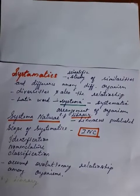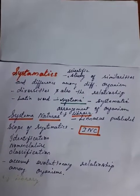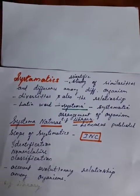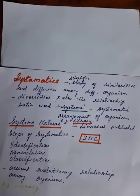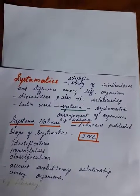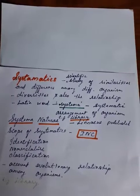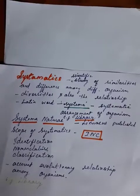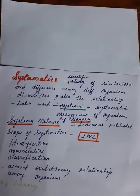The scope of systematics can be remembered easily: I — identification, N — nomenclature, C — classification. Systematics accounts for evolutionary relationships among organisms. So far I have covered half of Chapter 1 in this video. I will cover the taxonomical hierarchy and the remaining part of the chapter in the second video. Okay, bye.